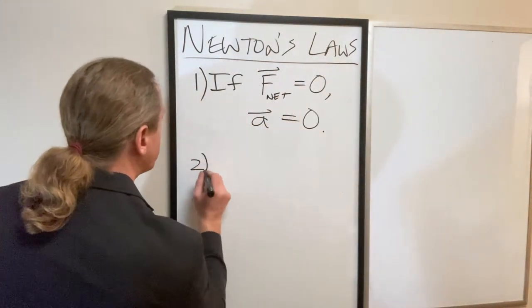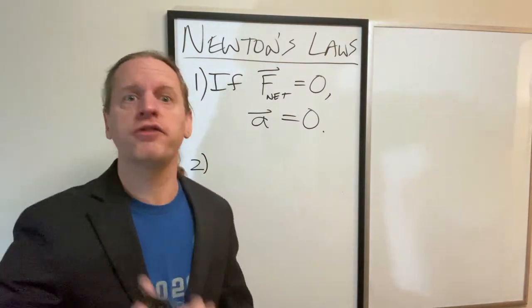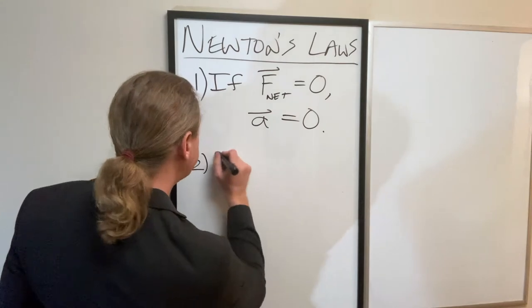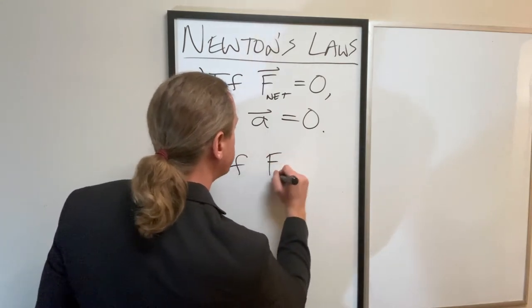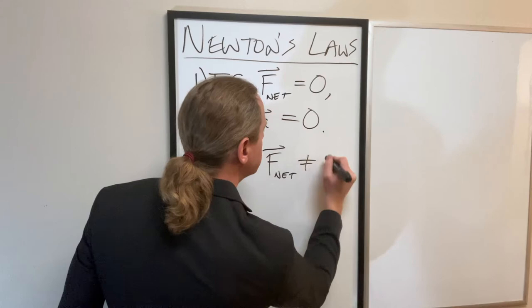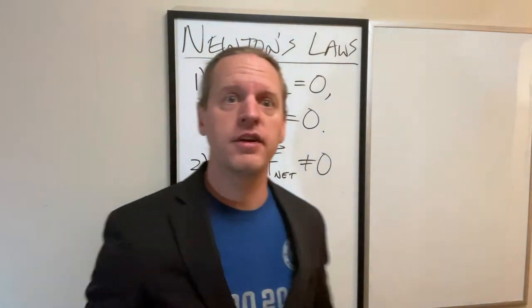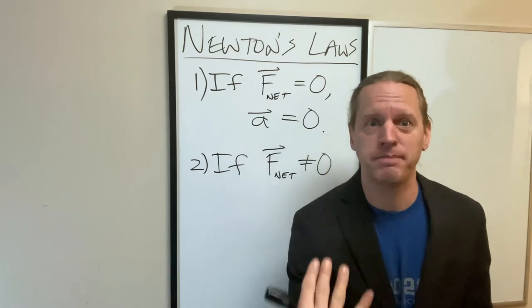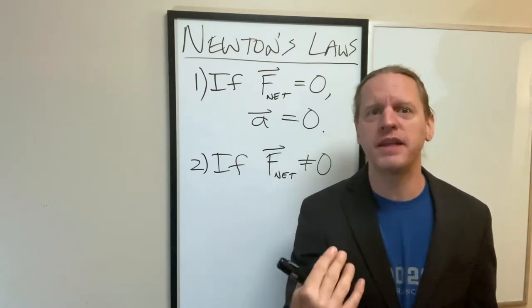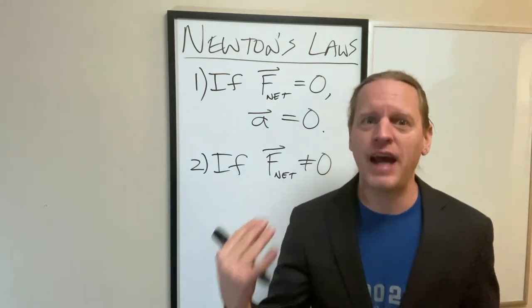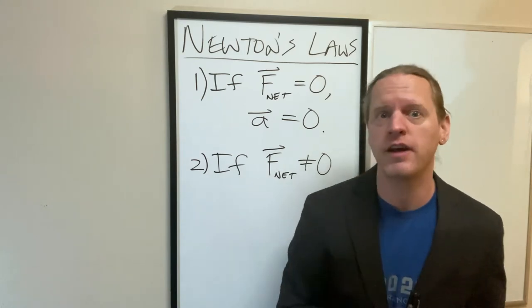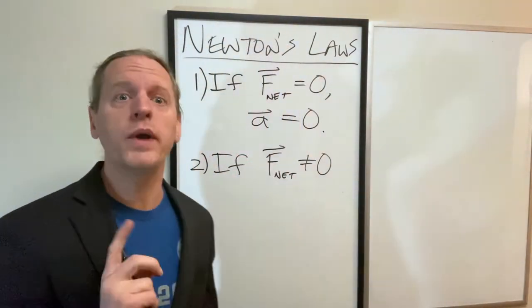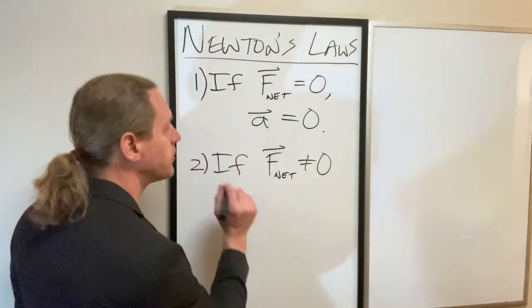So, that's what law one said. Basically, if you don't have a force, you don't change your velocity. Law two said, now, if F_net does not equal zero, Newton told us how to predict what will happen now. And keep in mind, this is a mathematical prediction, which was not something that had been kind of recognized how powerful the laws of mathematics are until his day. So, he said that if the net force is not zero, we can calculate the acceleration.